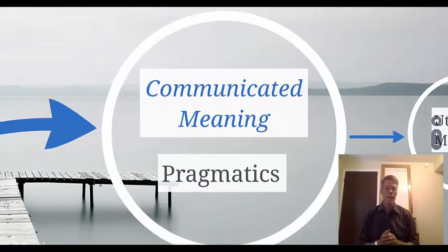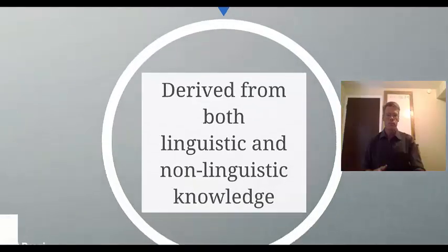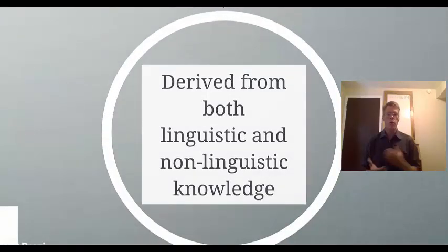Which brings us to communicated meaning, pragmatics. It's getting at the utterance. So when we talk about linguistic meaning, we're either talking about words or sentences. When we talk about communicated meaning, we're talking about utterances. That is to say linguistic phrases, sentences, words that people actually say in a context. That is to say that they're using the words and the sentences. Communicated meaning is derived from both linguistic and non-linguistic knowledge. So you need to know linguistic meaning in order to figure out what's being communicated. But you also need to bring in certain non-linguistic knowledge.